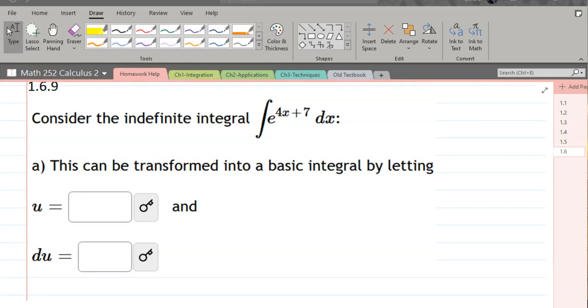So we're working on 1.6 number 9. We want to integrate this e to the 4x plus 7 dx and they're already telling us, well actually they don't even ask us to integrate it, they just want to know the u and then therefore the du.